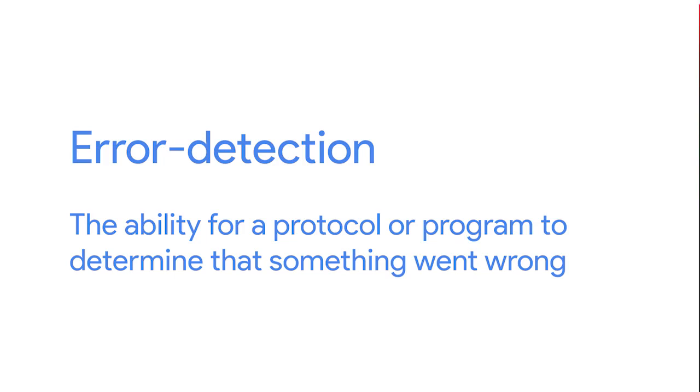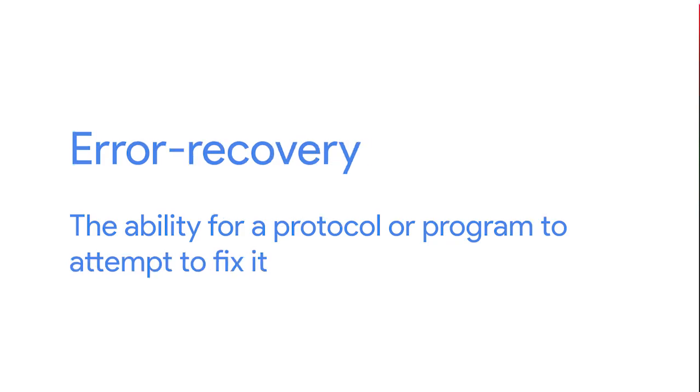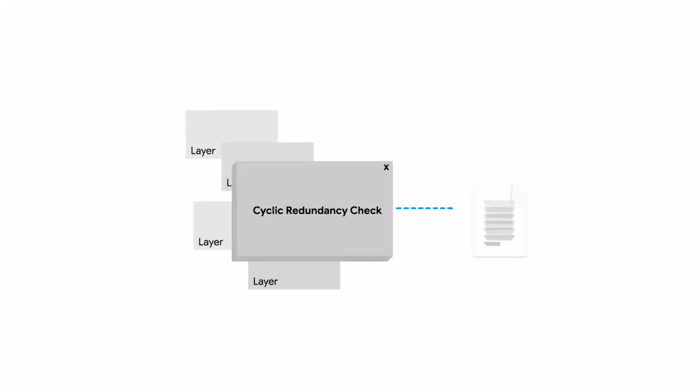Many of the protocols and devices we've covered have built-in functionalities to help protect against some of these issues. These functionalities are known as error detection and error recovery. Error detection is the ability for a protocol or program to determine that something went wrong.